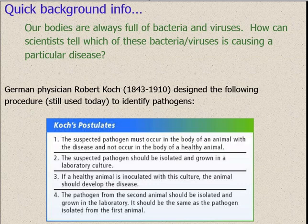And finally, step number four: the pathogen from that second animal that you inoculated should be isolated again and grown in the laboratory. If it is the same as the pathogen isolated from the first animal, you can be fairly certain that you have found the cause of the disease. Keep in mind, you have trillions of bacteria inside your body, so this is a fairly slow process.